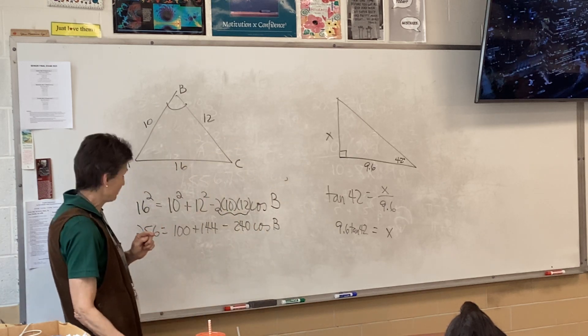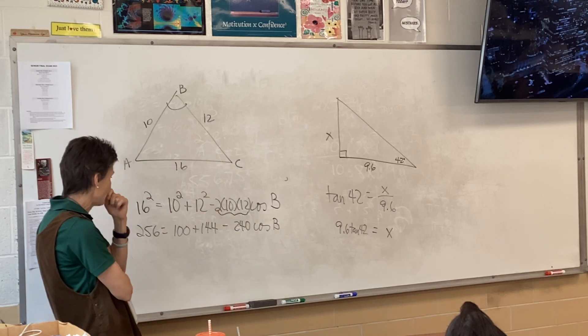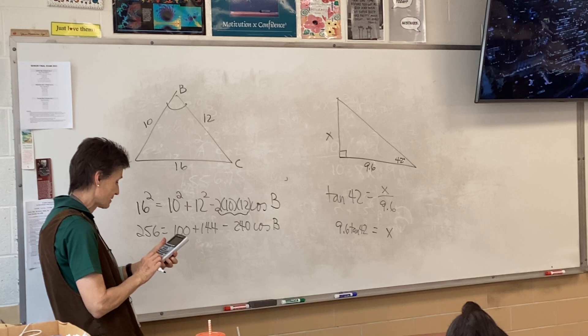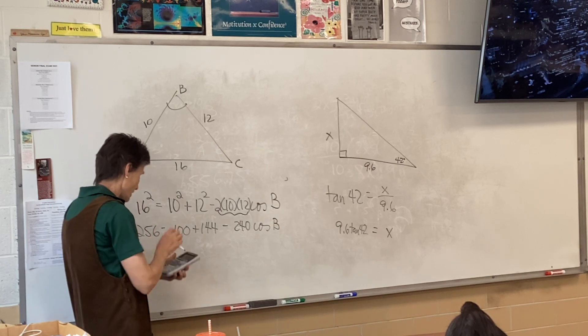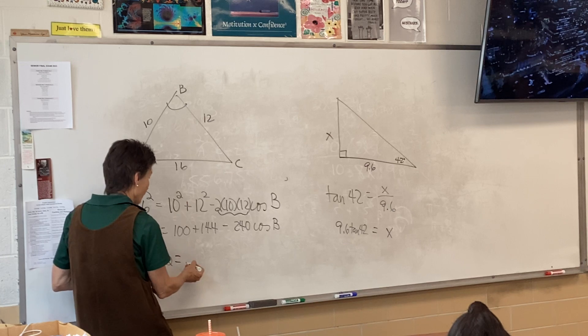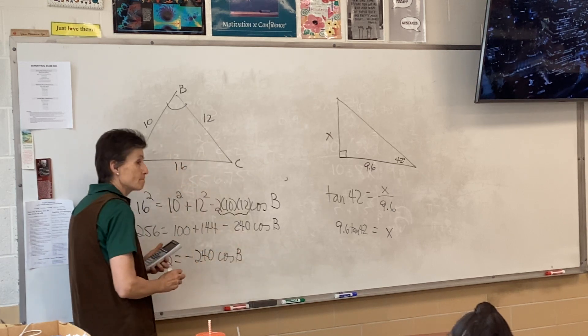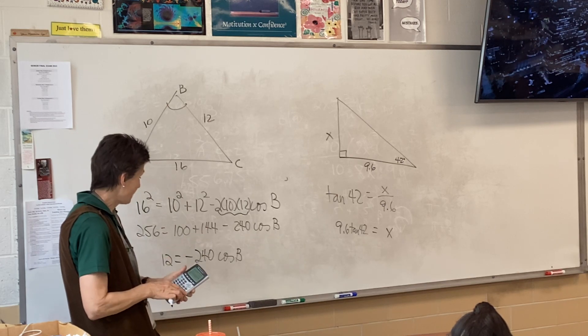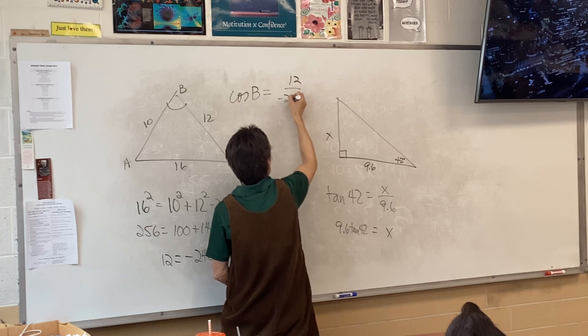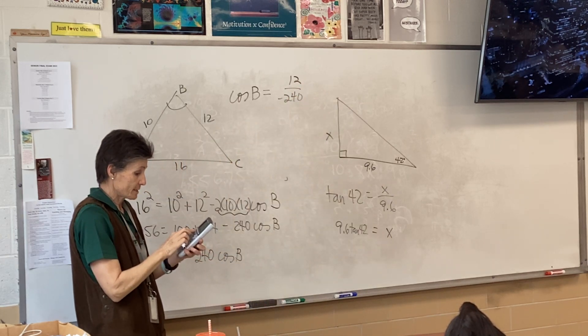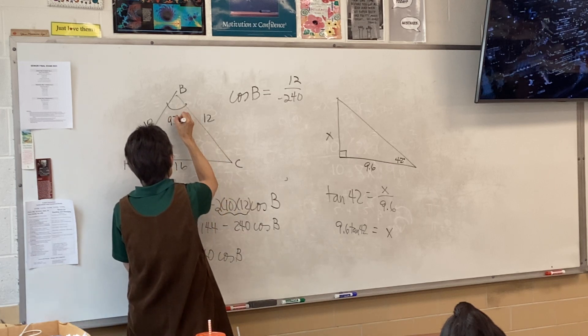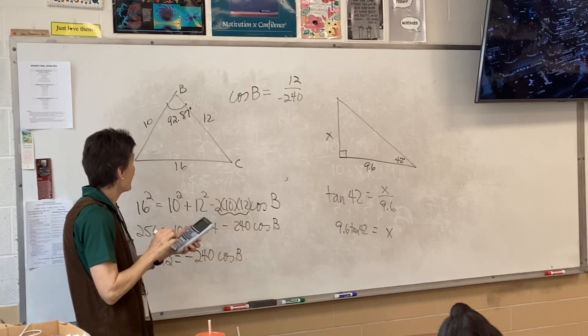I've done all the basic multiplication now. 256 minus the 100 and minus the 144 is going to give me 12 equal to negative 240 cosine b. Divide, so cosine b ends up equaling 12 over negative 240. Second cosine, 12 divided by negative 240. I got 92.87 degrees for angle b.